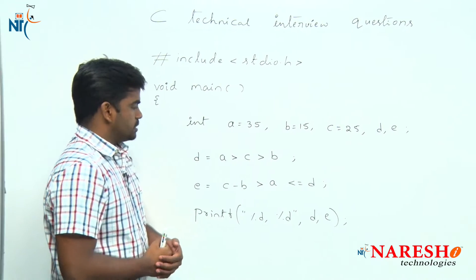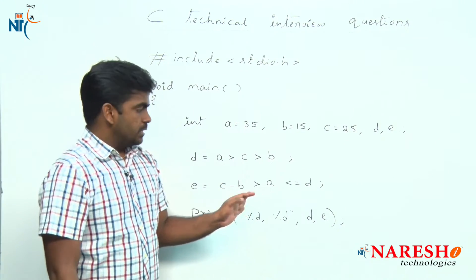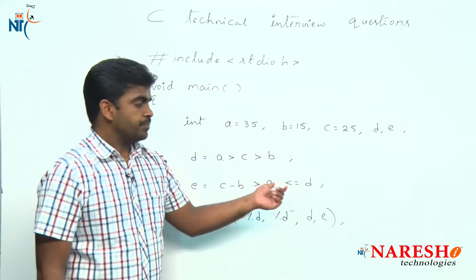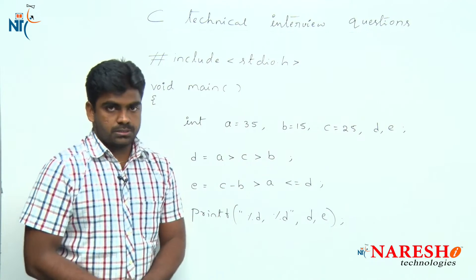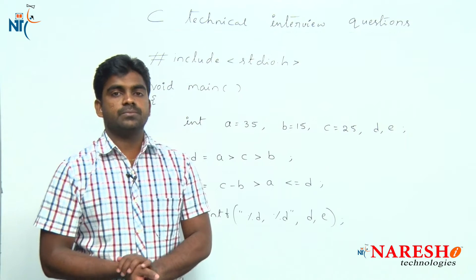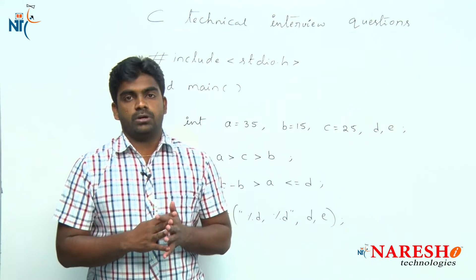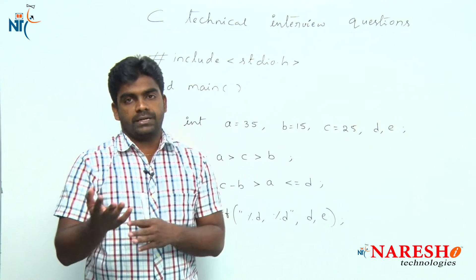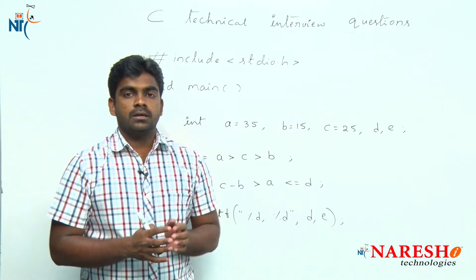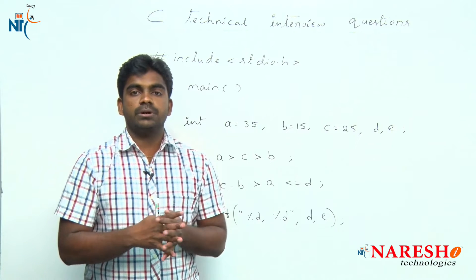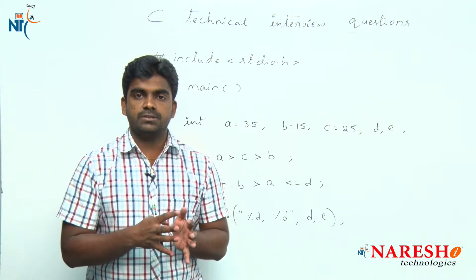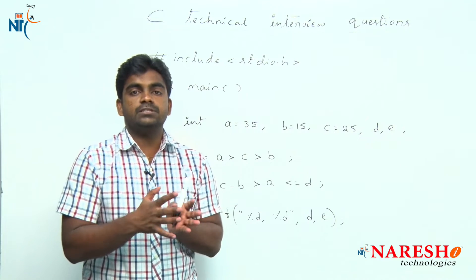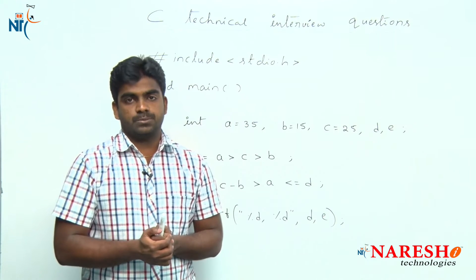Here is a code snippet. In this C technical question we are using the concept of relational operators as well as arithmetic operators. One important point is all the relational operators have equal priority, that is the same priority. The expression evaluates from left to right, and compared to relational operators, arithmetic operators have the highest priority. So first arithmetic operators execute, and then it checks the relation among the expression.